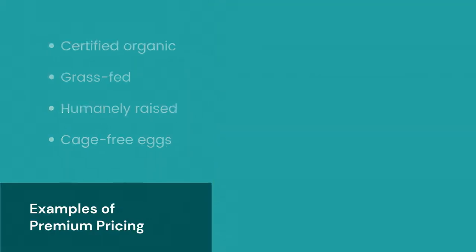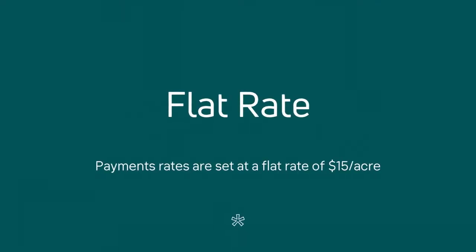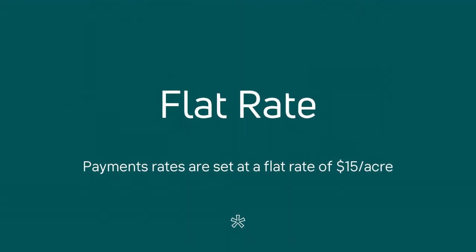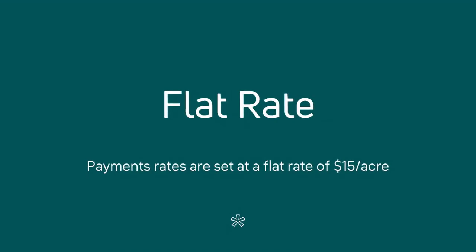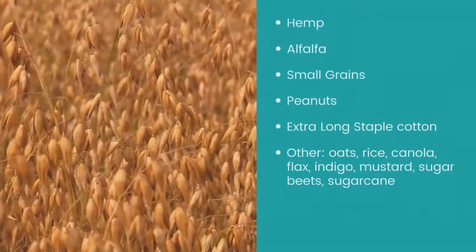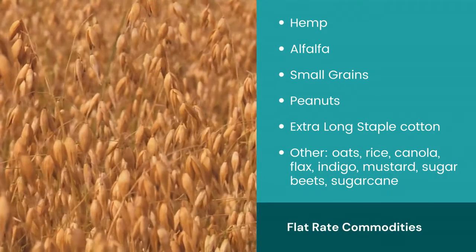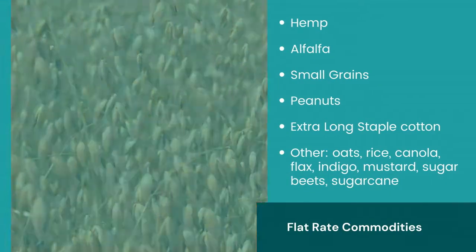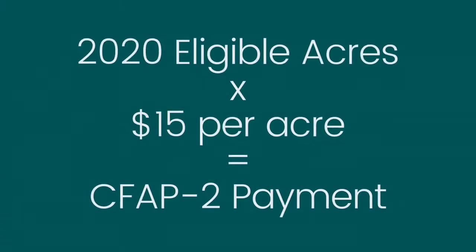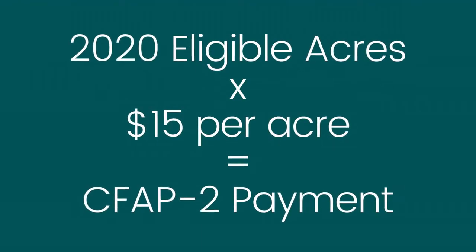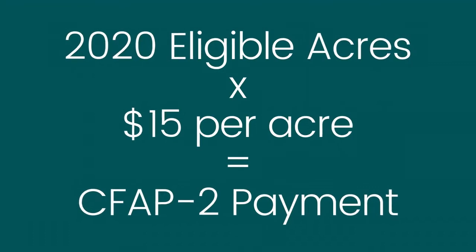The second payment method is flat rate. Commodities that fall under this category are those that may lack sufficient data to demonstrate a decline in price, like those listed under price-trigger. This includes crops like hemp, alfalfa, small grains, and peanuts. Payments for flat rate crops will be equal to the number of eligible acres of the crop multiplied by a rate of $15 per acre.